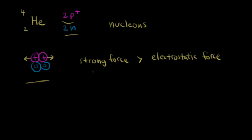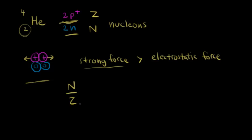For example, a proton-proton interaction is the same as a proton-neutron interaction, which is the same as a neutron-neutron interaction. The point is that this nucleus is stable, so let's think about why. We consider the atomic number Z, which tells us the number of protons, and the number of neutrons is N. The N to Z ratio here is two neutrons over two protons, which equals one.